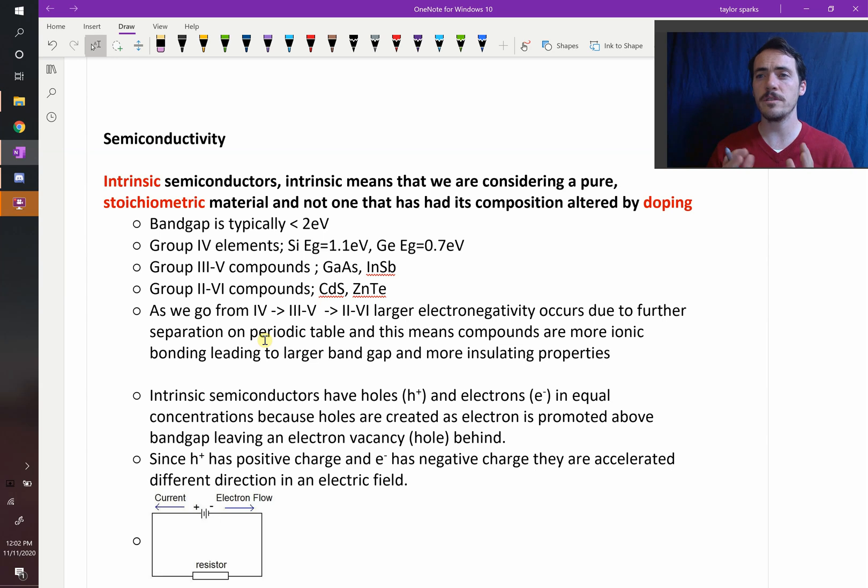So with intrinsic semiconductors, these things do have a band gap. The Fermi level is lying between our valence band of acceptable states and conduction band of acceptable states, but it's in this middle ground where there's no states available. But for semiconductors, the band gap is typically small, typically something like less than two electron volts.